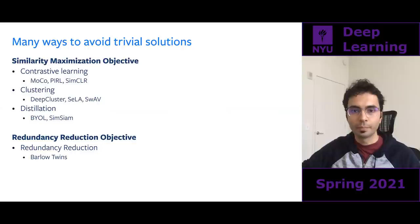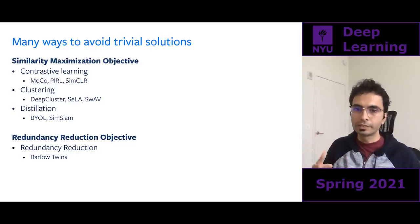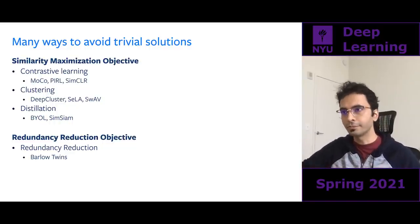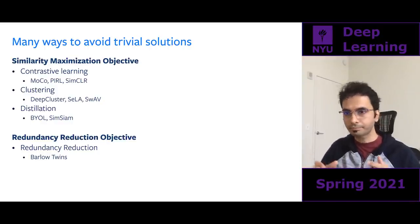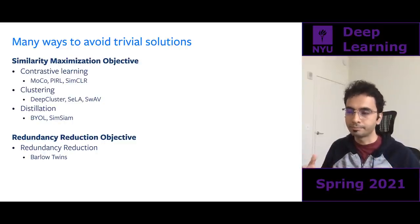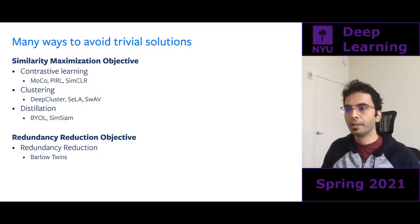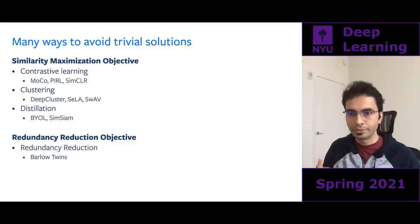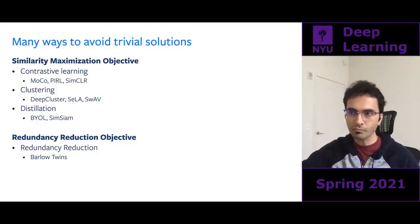Most recent self-supervised methods can be categorized by how they avoid trivial solutions. Within those methods we can draw two different kinds: the first class maximizes similarity between features from image i and augmented versions of i, avoiding trivial solutions by using contrastive learning, clustering, or distillation. There is another class that uses redundancy reduction to prevent trivial solutions. Let's look at the first class: contrastive learning.